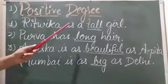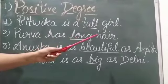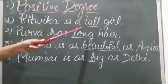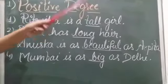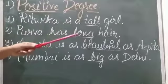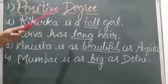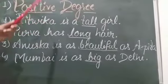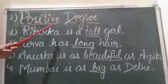For example, Hrithika is a tall girl. Second example: Purva has long hair. In these two sentences, 'tall' and 'long' are the adjectives. We can see Hrithika is not compared to any other girl. Similarly, Purva's hair is not compared with anybody's hair. So these two adjectives are in their simple form. We will take them under positive degree because they are not compared with any other person or thing. Tall and long are in simple form and come under positive degree.